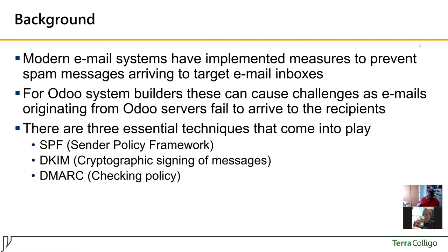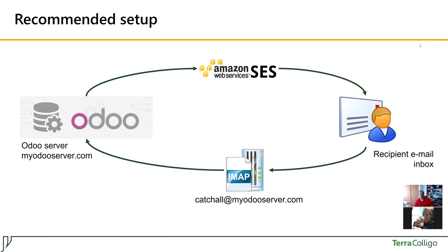The problem is that if you are a system builder and you are building a system for Odoo, you can't just expect that emails from Odoo are arriving to recipients' email boxes without any problems. You have to deal with SPF, DKIM and DMARC. In this video we will explain the principles behind these and then show how to do it. This is the intended architecture we want to implement.